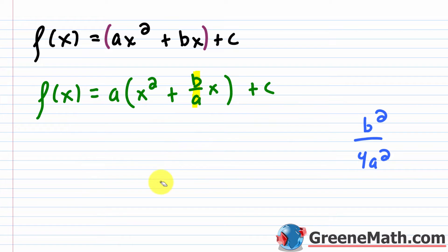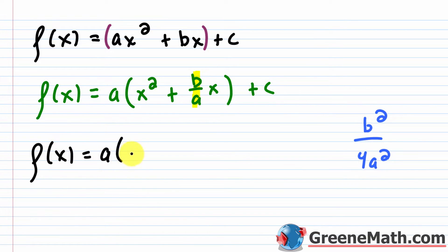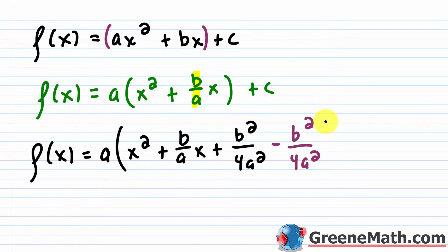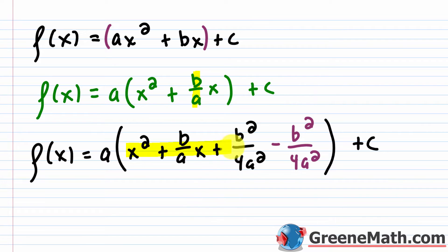Using the rules of exponents, that becomes b squared over 4a squared. What you do is add b squared over 4a squared on the inside of the parentheses — that gives you a perfect square trinomial — but you can't just add things without compensating. So you also subtract b squared over 4a squared. This is just adding zero, so nothing illegal is happening.